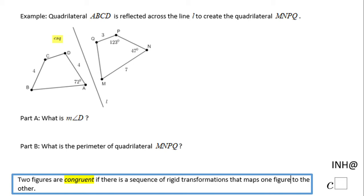Welcome back to NHC squared. In this example, we have quadrilateral ABCD reflected across line L to create quadrilateral MNPQ. We are asked to find the measure of angle D. First, I want you to look at this statement: two figures are congruent if there is a sequence of rigid transformations that maps one figure to the other.